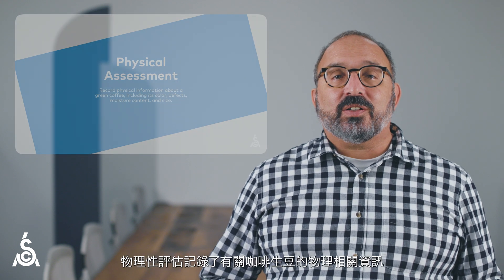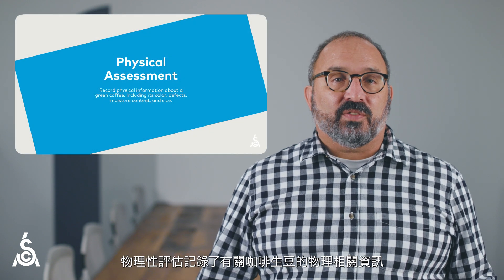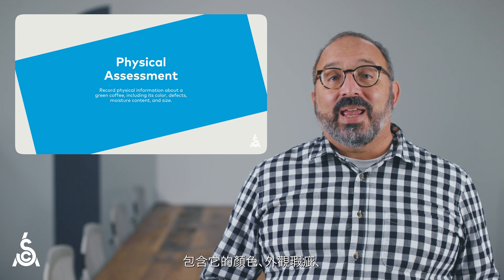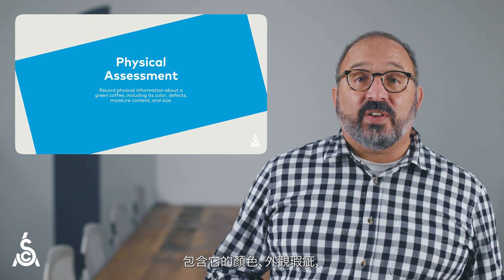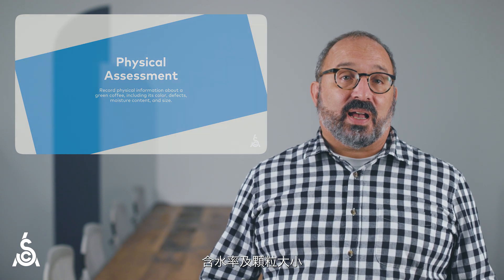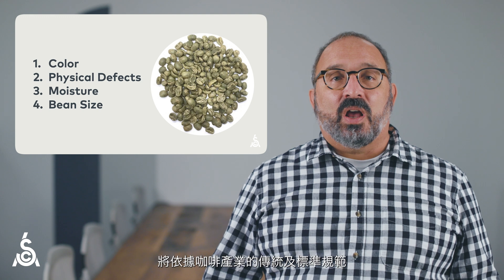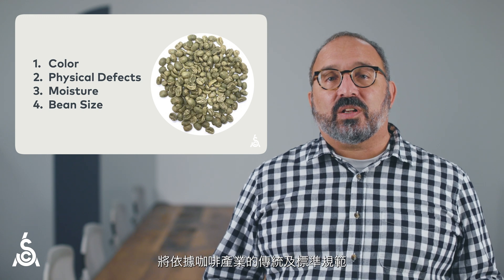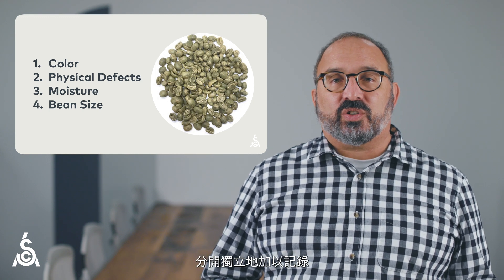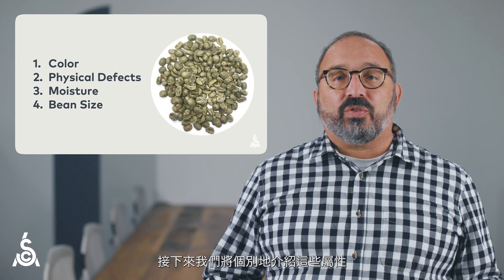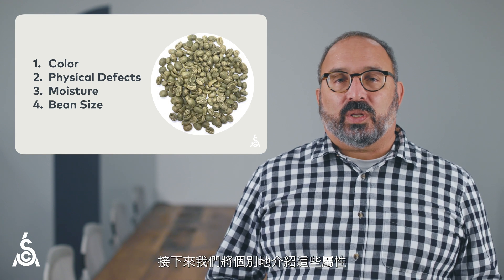In this video, we'll explore the physical assessment of the coffee value assessment. Put simply, the physical assessment records physical information about a green coffee, including its color, physical defects, moisture content, and size. These four elements — color, defect, moisture, and size — are noted independently and are based on traditions and norms in the coffee industry. We'll walk through each of these attributes individually.